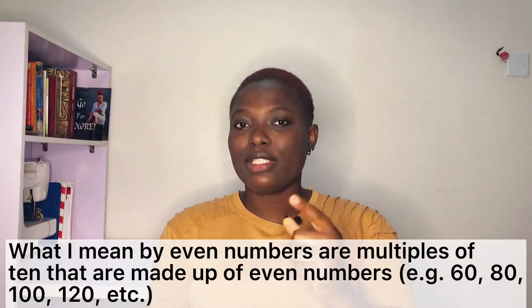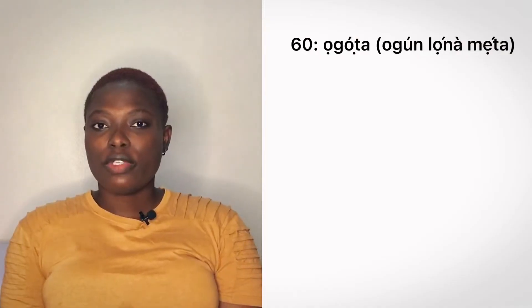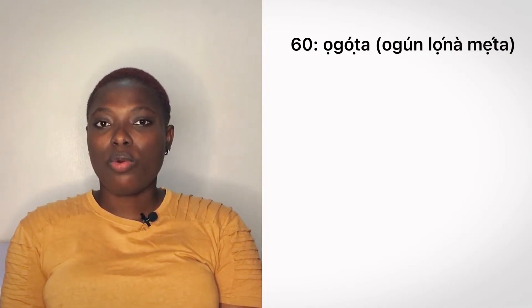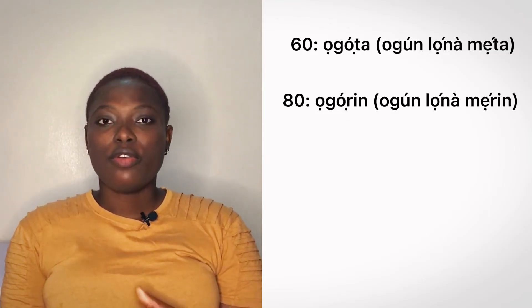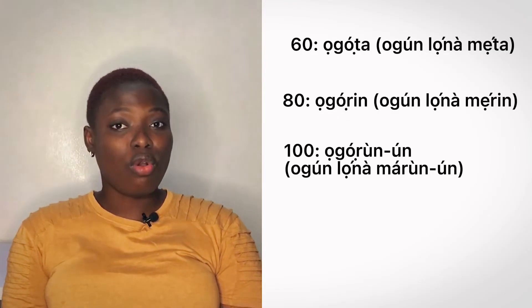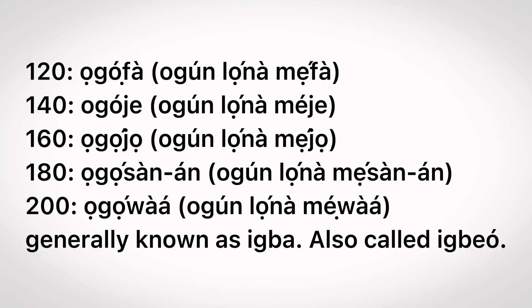The easier way to understand this is to first focus on the even numbers, then derive the odd numbers before them. For 60 we have ogota (ogun lono meta). For 80 we have ogore (ogun lono meta). For 100 we have ogono (ogun lono meta). For the odd numbers, simply deduct 10 from the even number above. So subtracting 10 from ogota gives you adota (50).